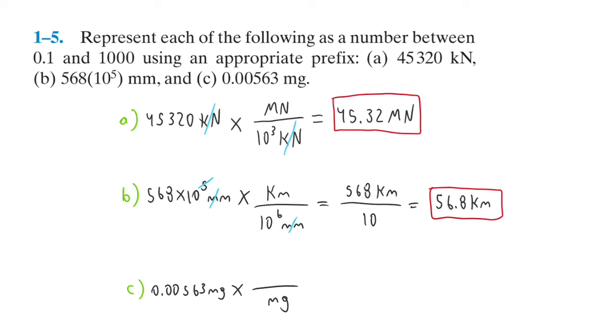For every milligram, there's 10 to the 3 micrograms. Milligrams cancel, and when you calculate it, you're going to get 5.63 micrograms. That's between 0.1 and 1,000, so this is the last answer.